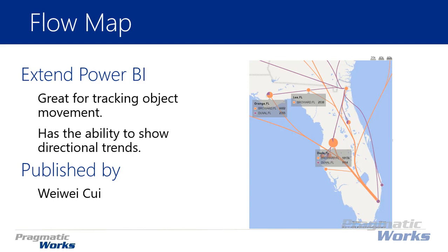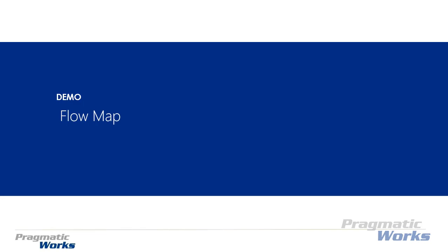By the size of the line as well as the numbers indicated over each one of the bubbles, you can see there's an indicator showing that Dade County had 18,136 and Duval County had 1,114 movement towards that county. It's good for showing that directional trend, and you have multiple things you can tweak and change within the format paintbrush of this visual. So let's take a look at how the flow map works.